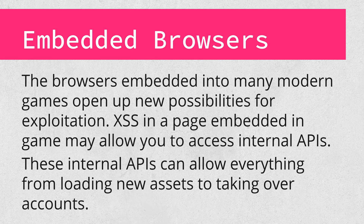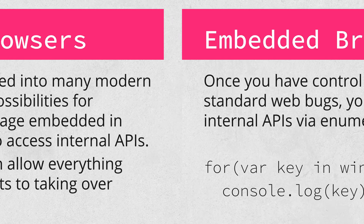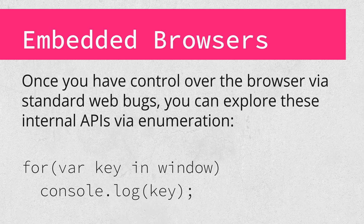Many games developed in the last decade or so contain some form of embedded browser, often used for showing documentation, account settings, support, and other functionality. Conveniently for us hackers, the pages in these browsers can be vulnerable to most of the same web bugs you're already familiar with. Additionally, these browsers are often supplied with bindings to internal APIs, allowing everything from asset loading to manipulating the game UI or performing character actions. Once you get control over the browser — via XSS for instance — you can use a snippet to enumerate those APIs. This will log everything in the global scope, which will typically point you to where you need to look. Since these APIs won't generally be documented, it's a lot of exploring JavaScript objects and trial and error to figure out how to exploit them.